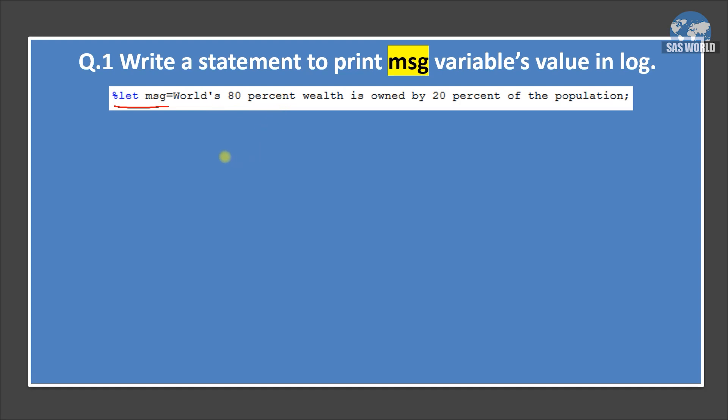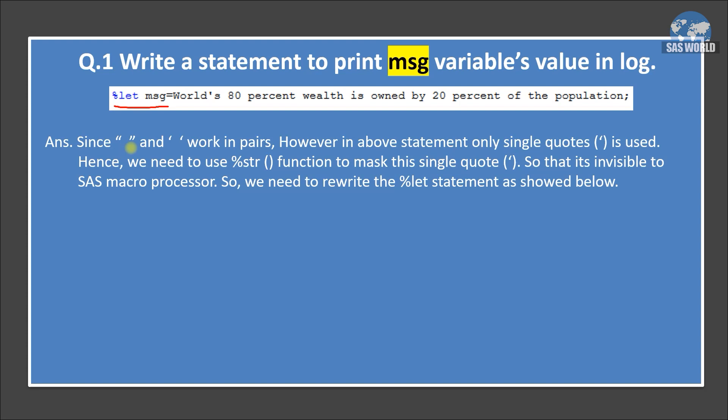So we are creating macro variable MSG and assigning this text. So if you want to print this, yes, we can use percent put statement. You may be thinking about it, but in this statement, there is a problem. Let's understand what is the problem. Since double quotation or single quotation works in pairs, in SAS programming, whenever we specify quotations, we need to specify in pair. However,